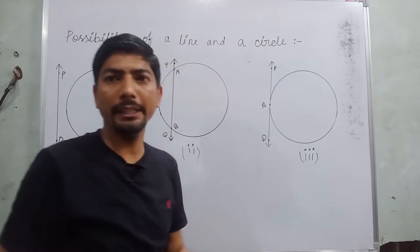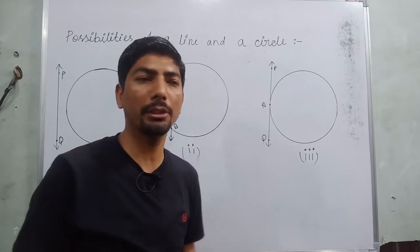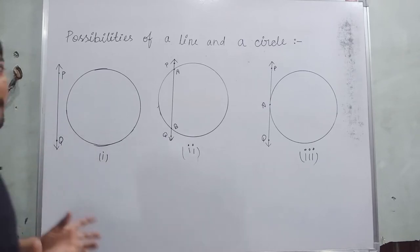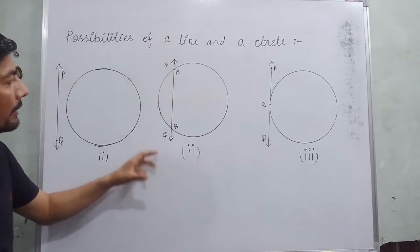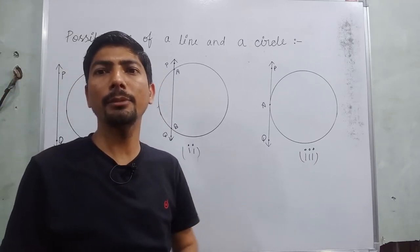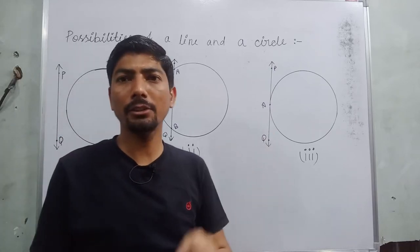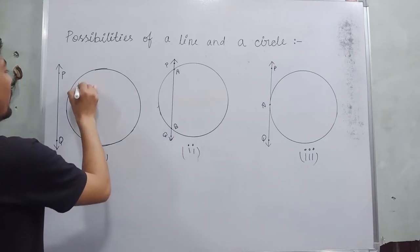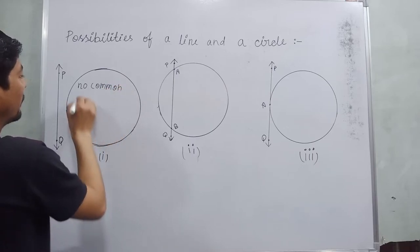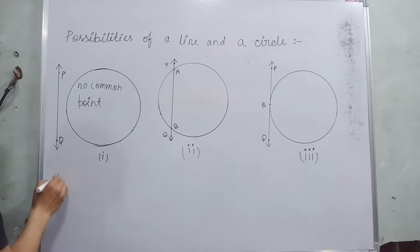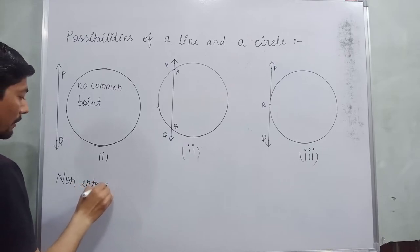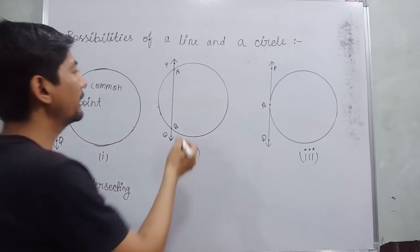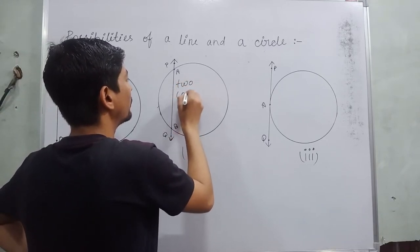Next topic: what are the possibilities of a line and a circle? There are three possibilities. First, the line does not intersect the circle at all. Second, the line passes through two points of the circle. Third, the line passes through only one point of the circle. Lines that do not intersect the circle are called non-intersecting lines — these are not tangents.